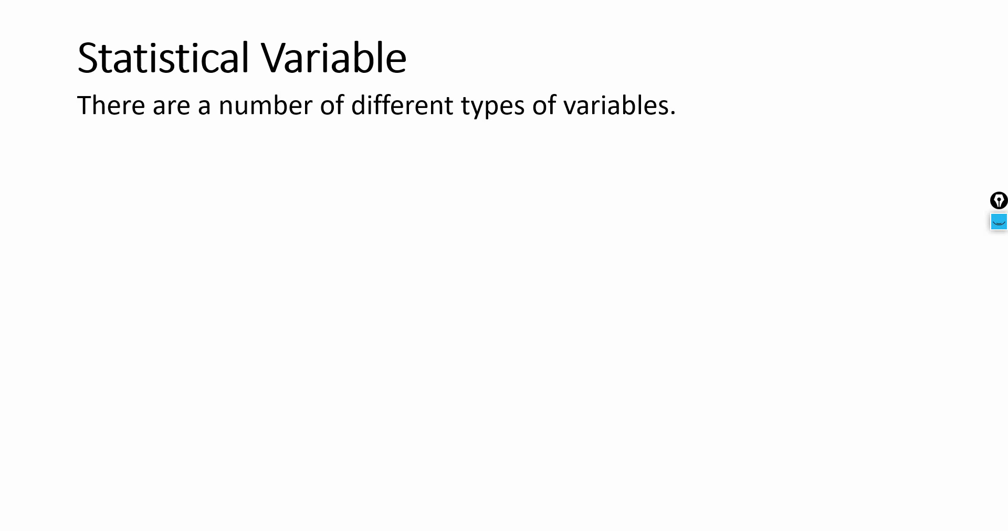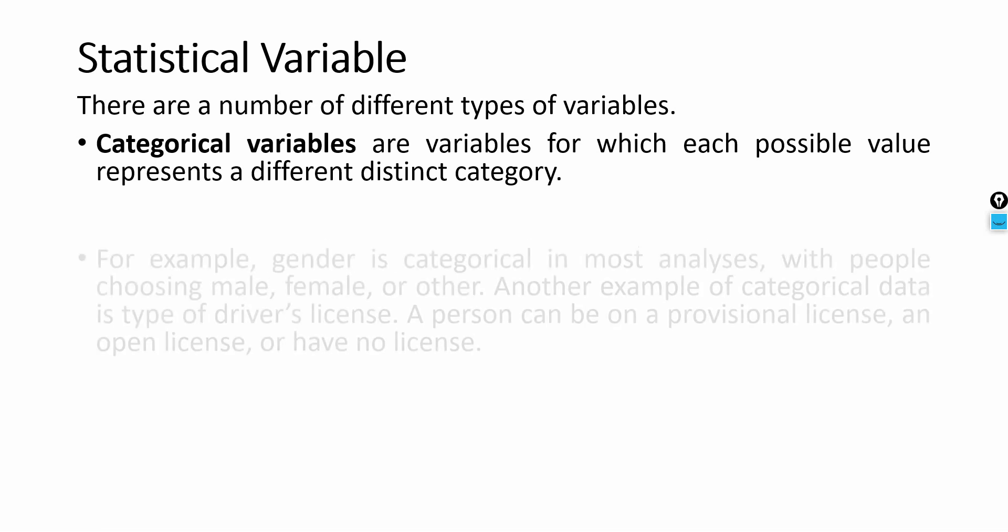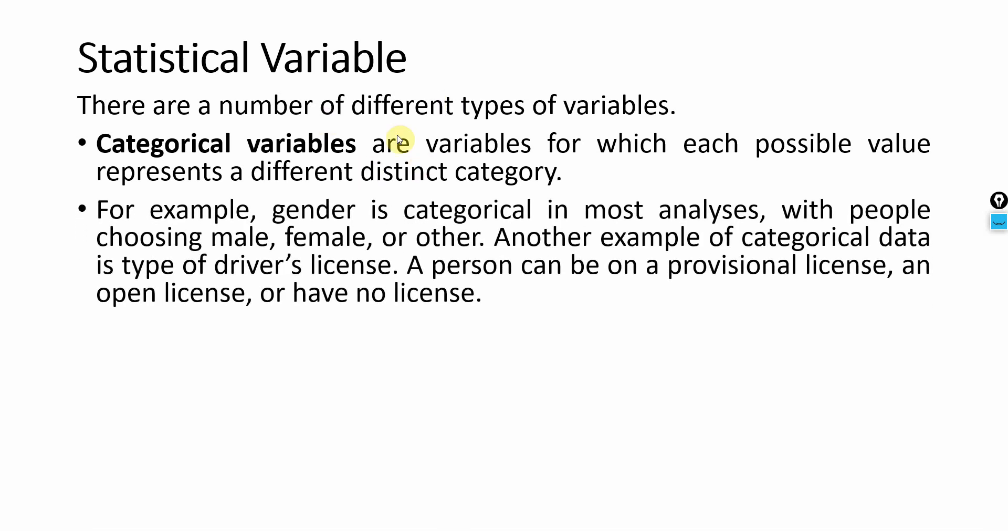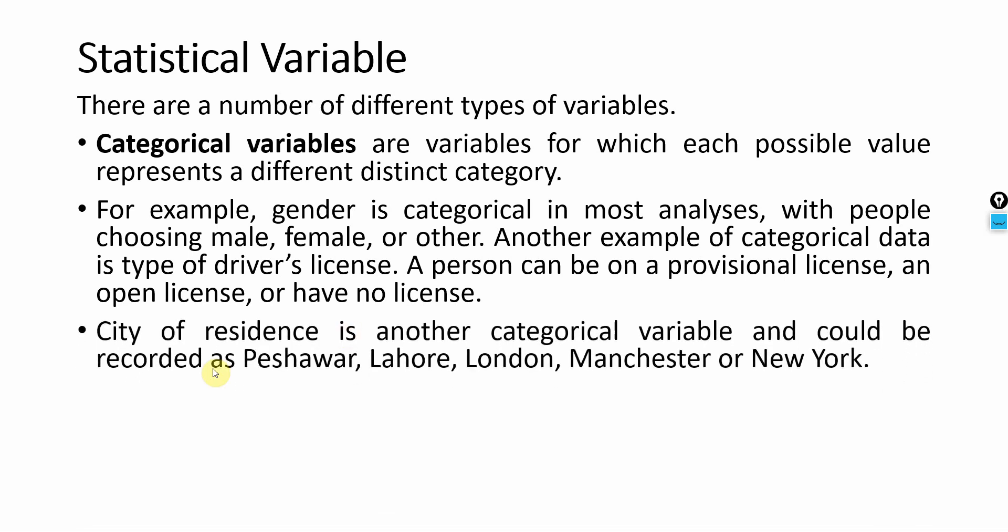There are a number of different types of variables. There are categorical variables—these are the variables for which each possible value represents a distinct category like gender, job rank, or education. Gender is a categorical variable, type of driver's license is a categorical variable—you can have a provisional license, open license, or no license at all. City of residence is another categorical variable: it could be Peshawar, London, Lahore, Manchester, or New York.